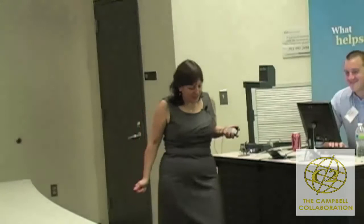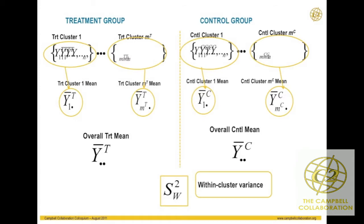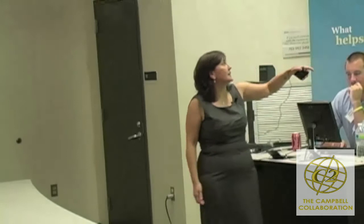Here is an illustration of the within-cluster variation. We have each cluster, each individual observation within each cluster, and its difference from its cluster mean. Pooling that across all the means gives us our within-cluster variance. We call it S-squared W — W for within-cluster variation.